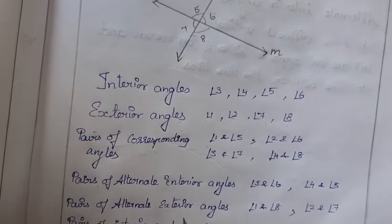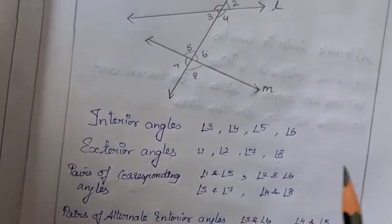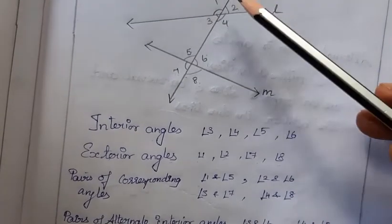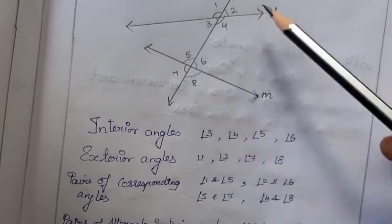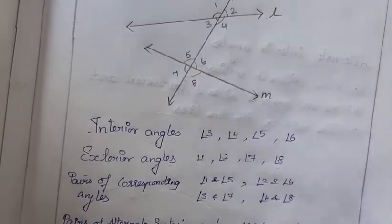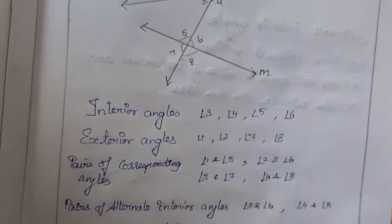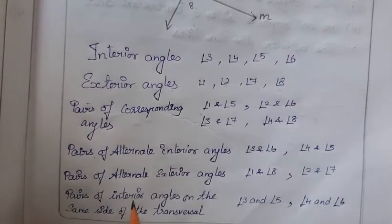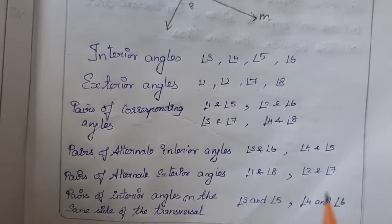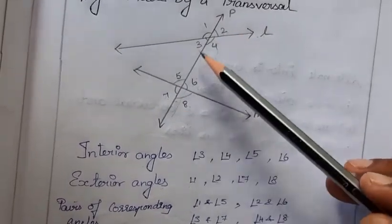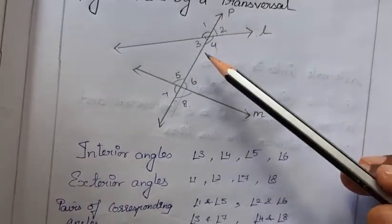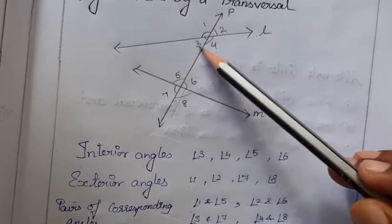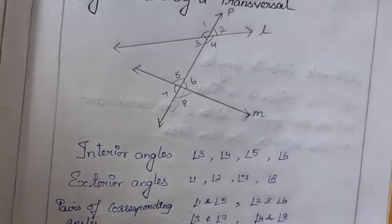Pairs of alternate exterior angles: 1 and 8, both exterior and alternate; and 2 and 7. Pairs of interior angles on the same side of the transversal: 3 and 5, and 4 and 6.